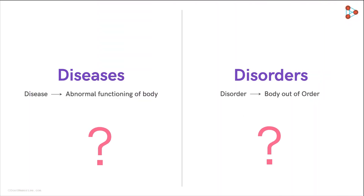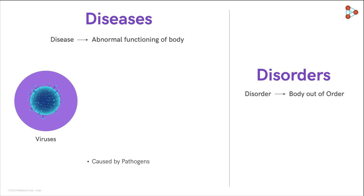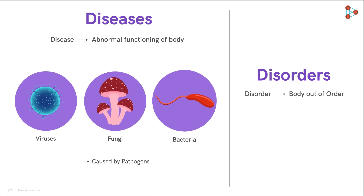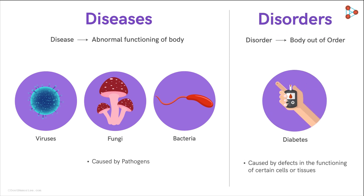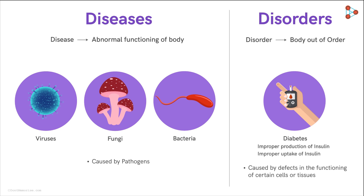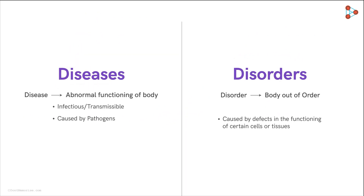So are the two conditions different? Well, technically yes. Diseases are mainly caused by pathogens — that is, external agents like viruses, fungi, bacteria and so on, which enter the body and create problems. On the other hand, disorders are caused by some defects in the functioning of certain cells or tissues. Take diabetes for example — it can occur due to either improper production or improper uptake of insulin by the cells. Diseases are usually infectious or transmissible, whereas disorders are not.